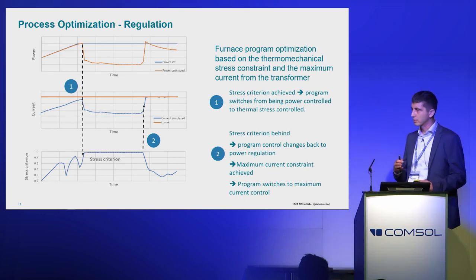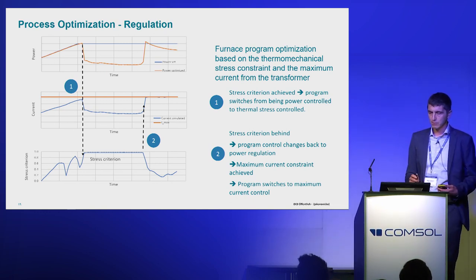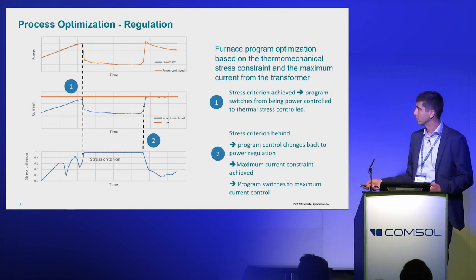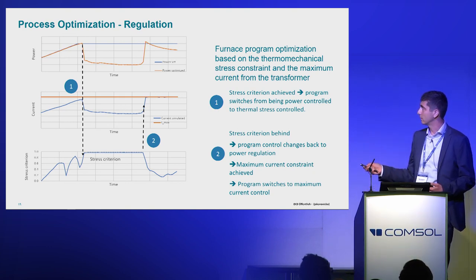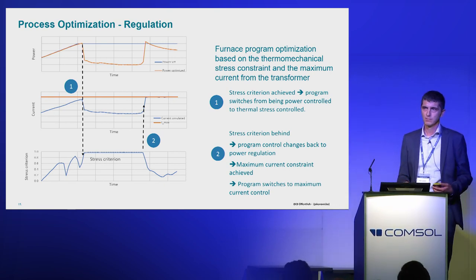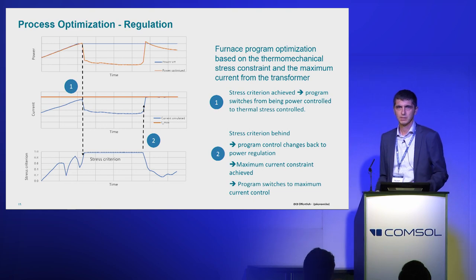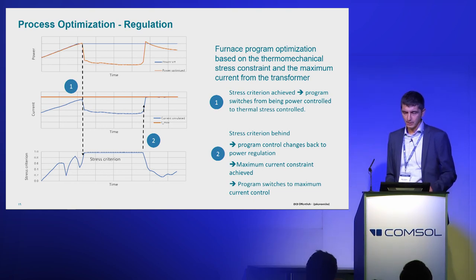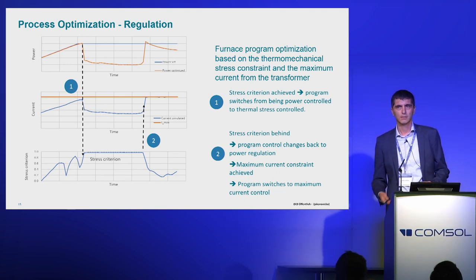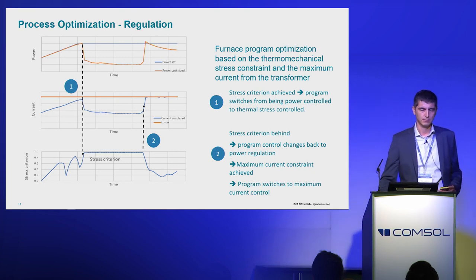I'll show an example of how process optimization and regulation may look. The blue line is something we'd like to stick to, and at the same time we have constraints — one is current, another is the stress criterion based on principal stresses. When you try to drive the process based on power, depending on the raw material and prior processes, you may get behavior related to thermal expansion — it can go up and down. Finally, you can reach the stress criterion, and we try to do this regulation in COMSOL to stick to it. When we fall behind, we try to increase the power, but at some point we achieve the maximum current — constrained by the transformer. The software then gives us the new power we can achieve based on events. If we don't have enough power, it's a big problem because we would have to repeat the process with less material inside.